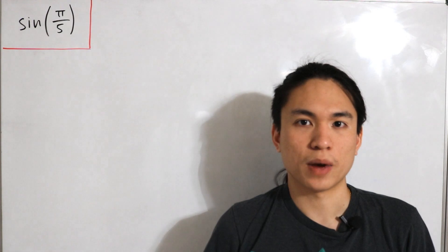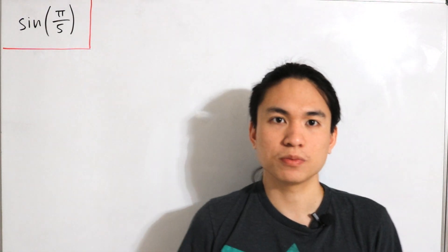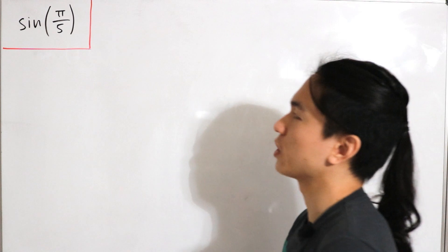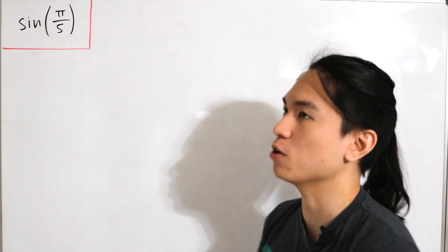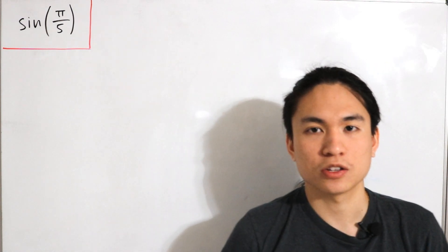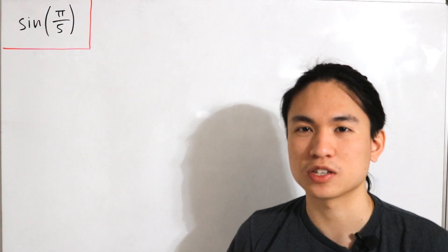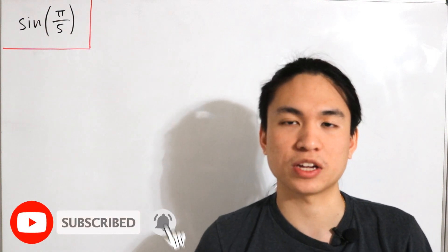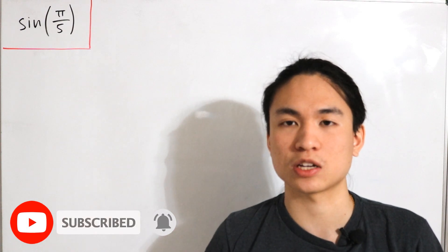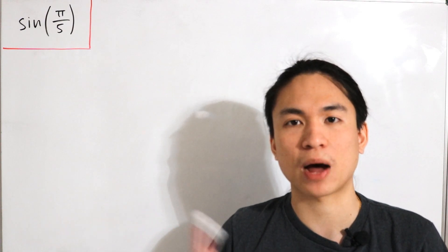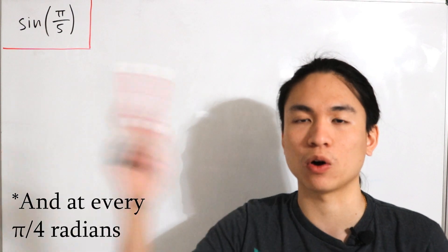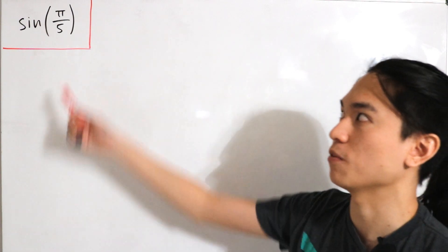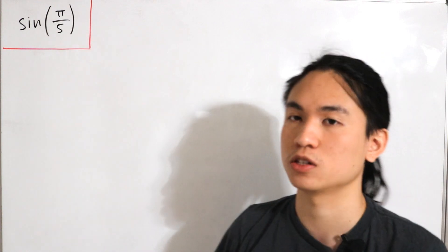Welcome back to another video. Today's video is just a simple computation: to calculate what the sine of π over five is equal to. That's not something you can easily look up on your unit circle, as you learn in pre-calculus, since the unit circle only gives values at every π over six radians, going all the way up to 360 degrees at two π. So that's not much help with this different input.